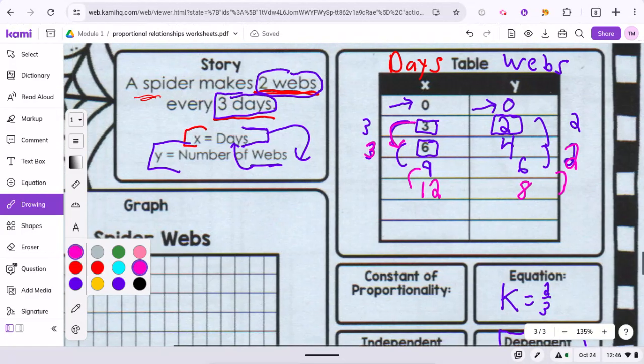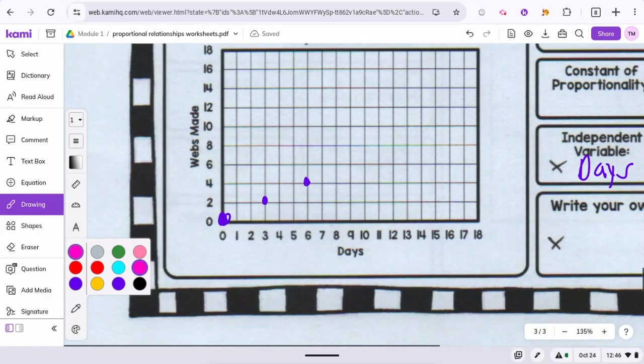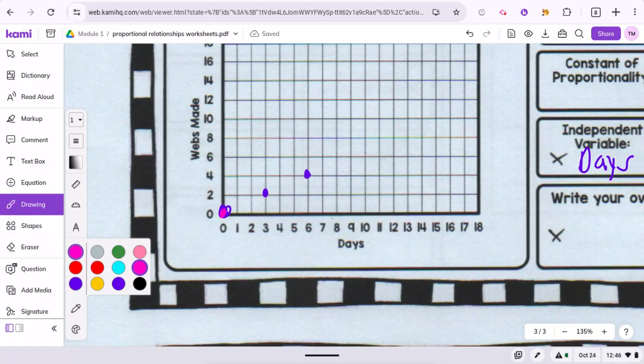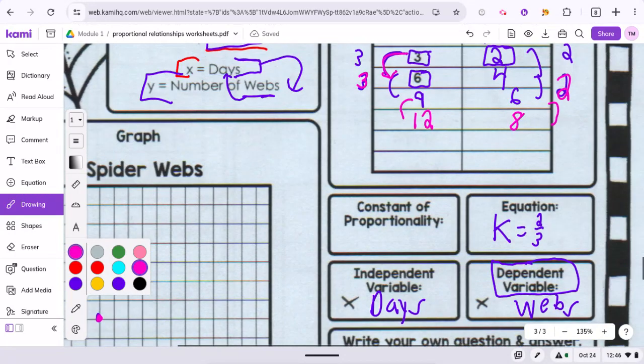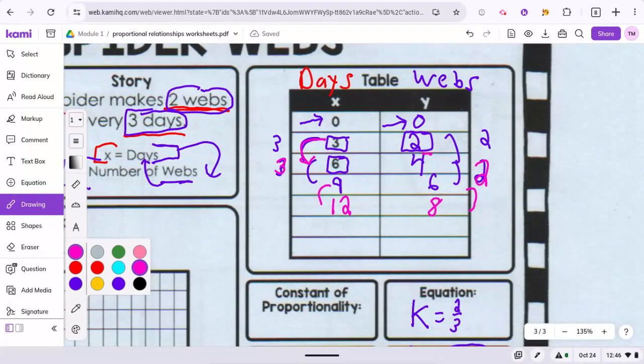And then you would also continue graphing these. So I have the first three. This is zero and zero, three and two, six and four. So these correspond to these numbers here.